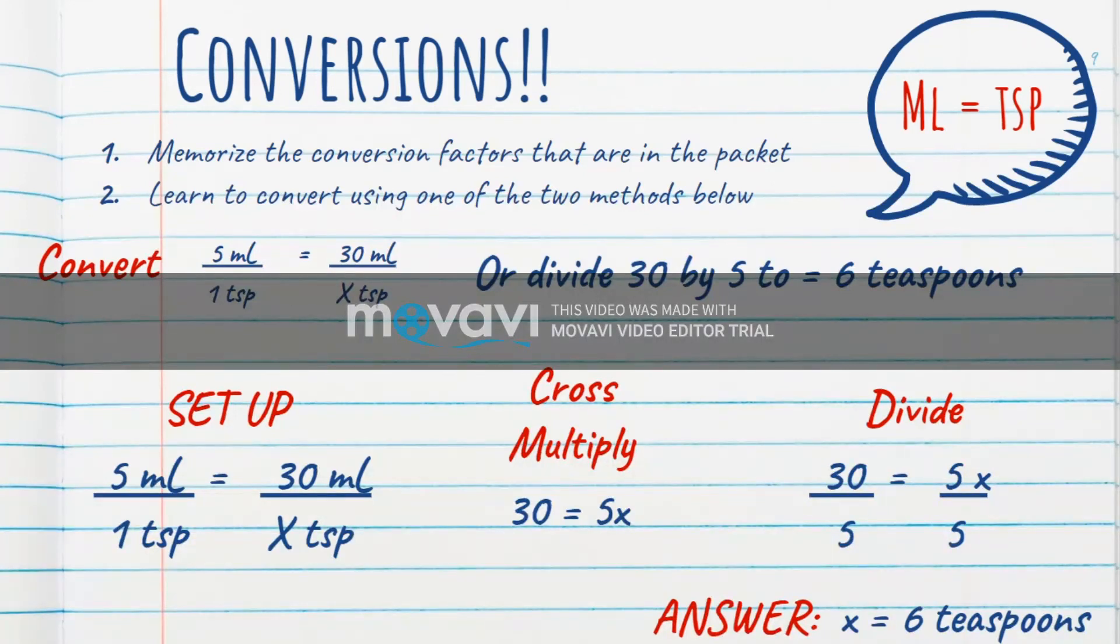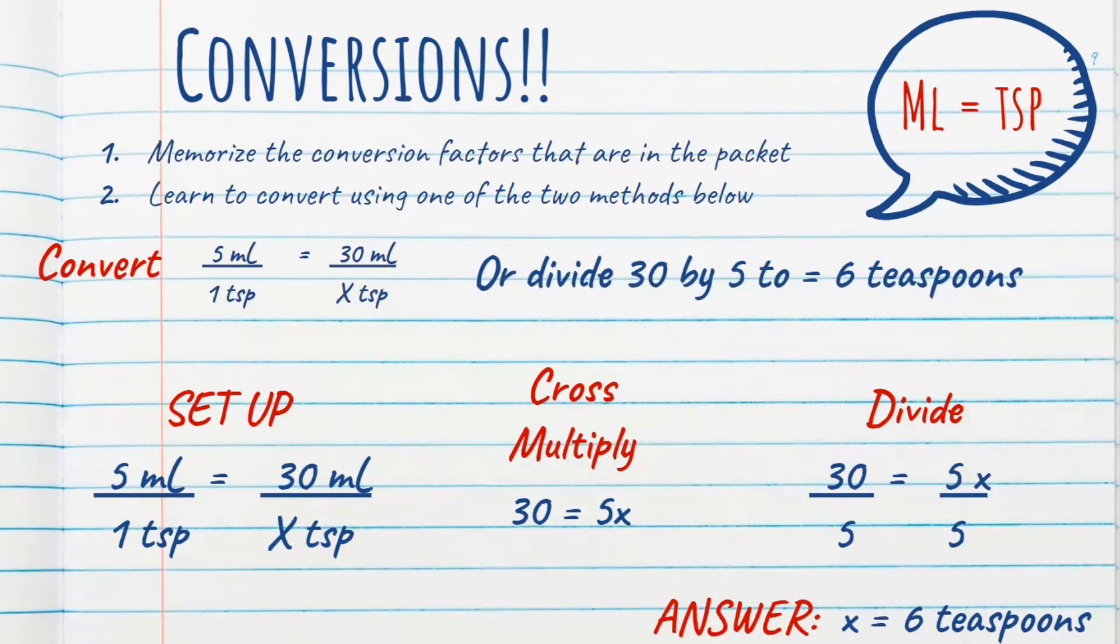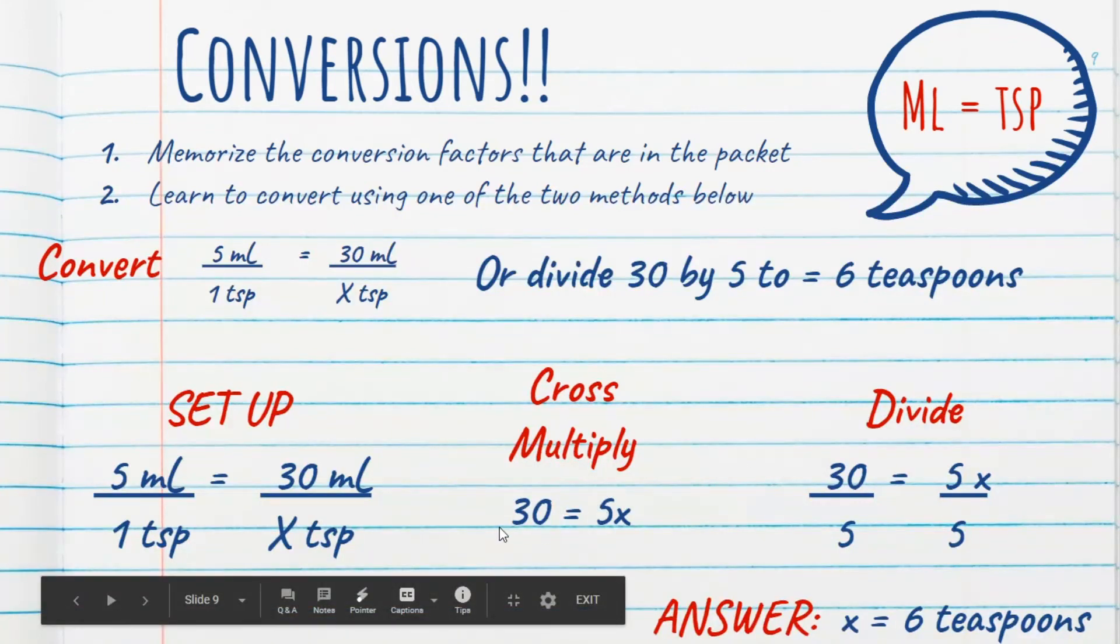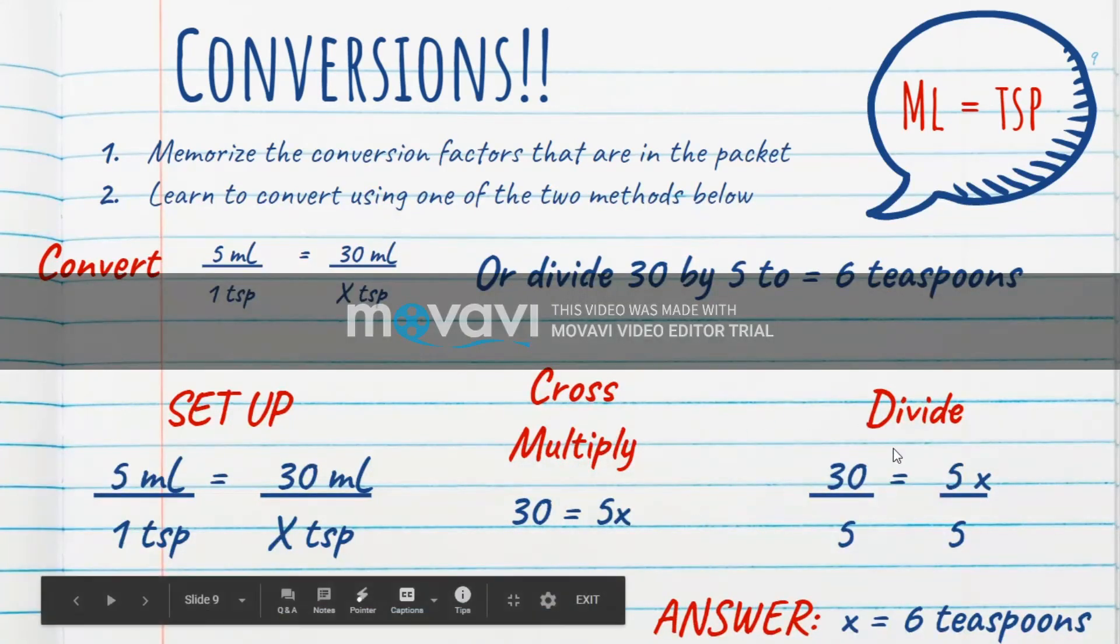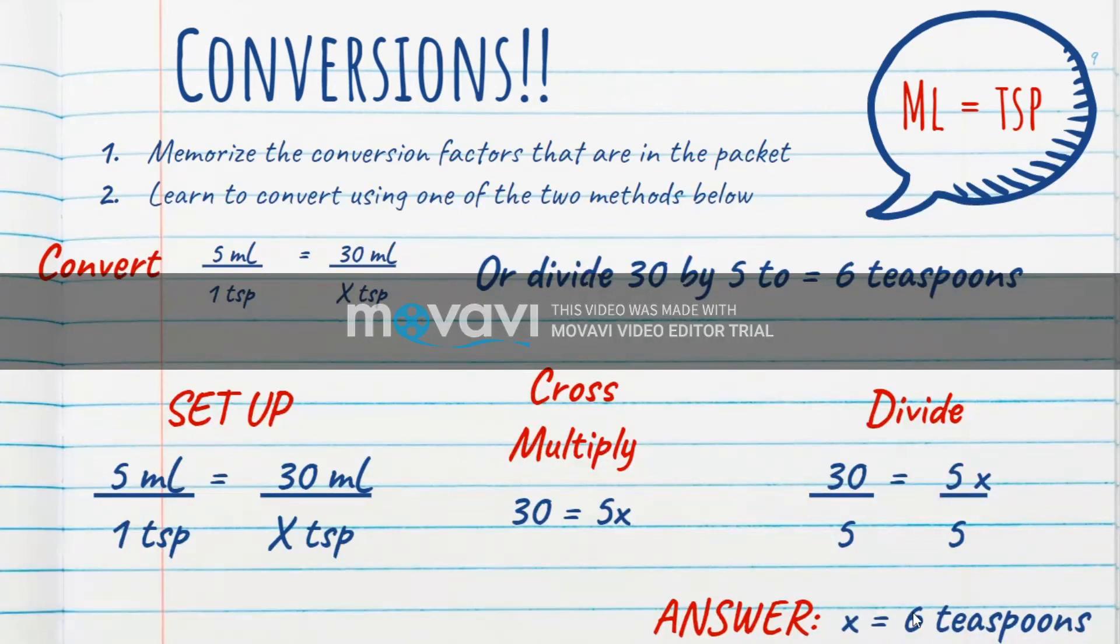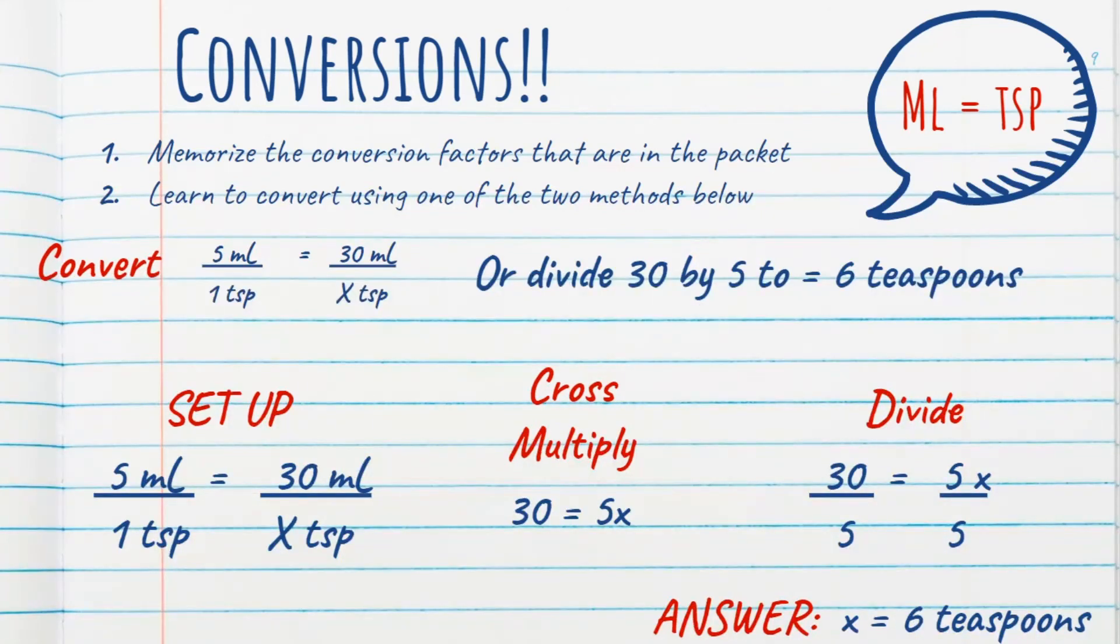We need to understand how many teaspoons are we going to tell this mom to give her kid. So we're going to set that up in the ratio and proportion. Then we're going to cross multiply over here. That gives us 30 equals 5x. In order to get the x to stand alone, we have to divide five on both sides. X equals six teaspoons. That is something that that mom can understand.